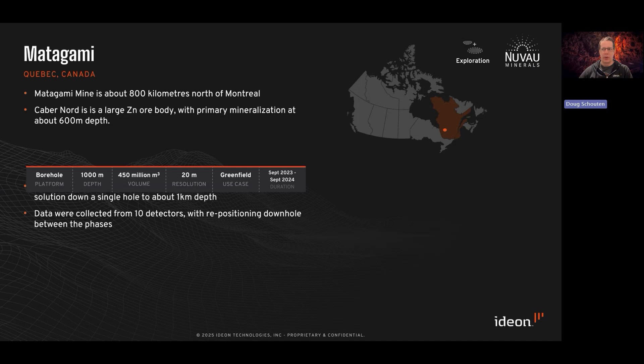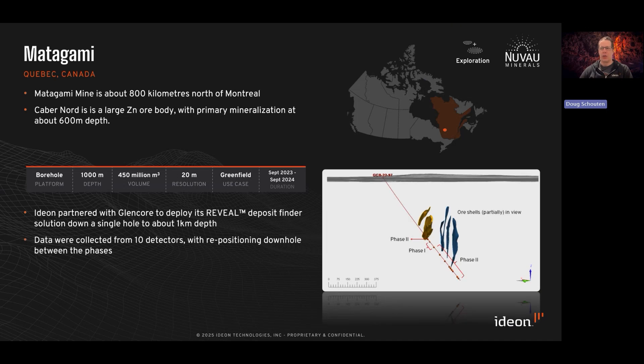Glencore was interested in looking for extensions at depth. We deployed our borehole muon tomography down to more than a kilometer downhole depth, and the data we're ingesting continuously into our cloud platform via a 4G cell link. Multiple detector locations down a single hole provided good 3D imaging capability just from that one hole over a large expanse of volume.